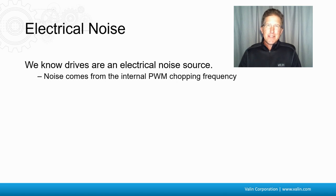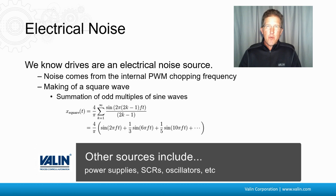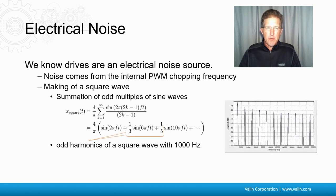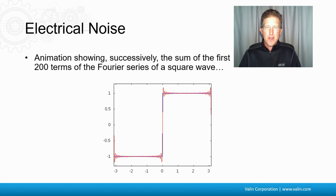Electrical noise is caused by some source. Servo drives, stepper drives, and VFDs are sources of electrical noise because they have PWM switching frequencies created inside of them. This is caused by the making of the square wave used to control the current to the motors. It has a summation of a bunch of odd multiple sine waves — the odd harmonics of the square wave. This animation shows the sum of the first 200 terms of the Fourier series of a square wave.